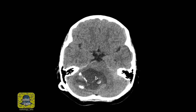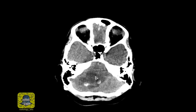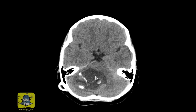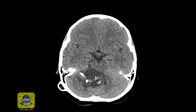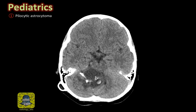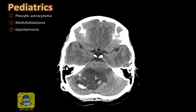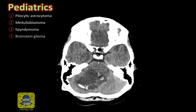When you see a posterior fossa mass, the differential diagnosis depends on whether you're looking at an adult patient or a pediatric age group. In pediatric age groups, the major differential diagnosis list includes pilocytic astrocytoma, medulloblastoma, ependymoma, and don't forget a brainstem glioma.